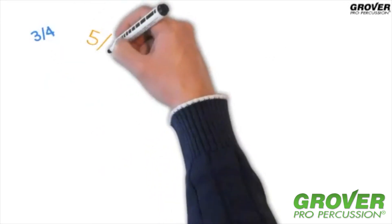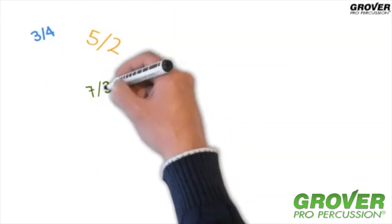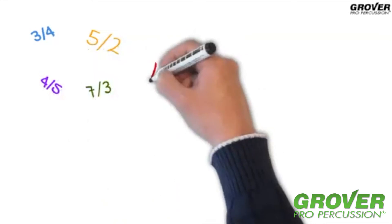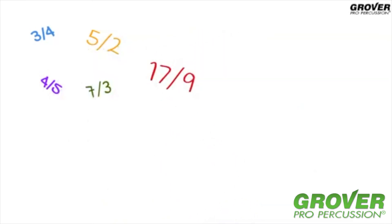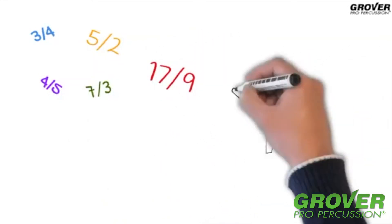So, whether it's 3 against 4, 5 over 2, 7 against 3, 4 over 5, or even 17 over 9, who knows, you might play a Turkish wedding. It's calculated in exactly the same way.